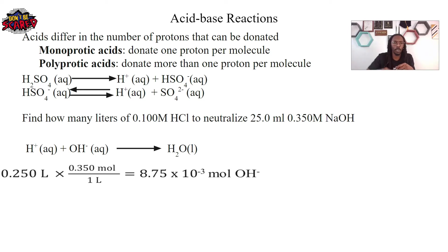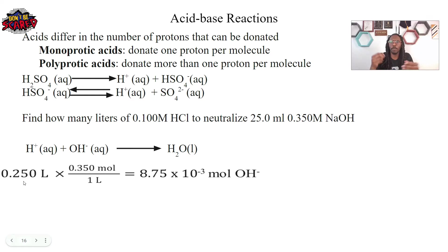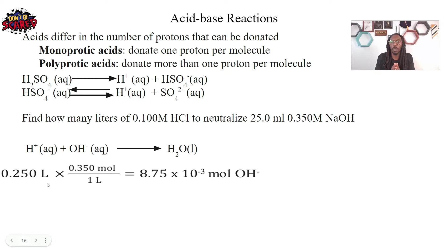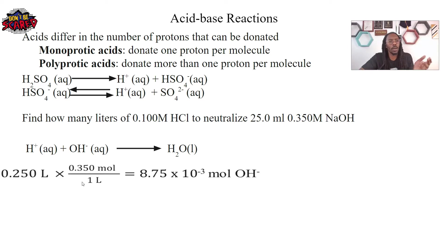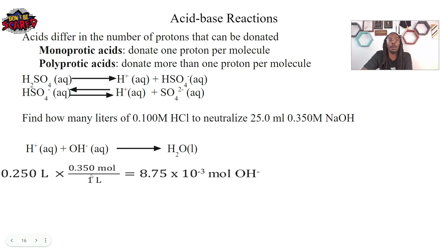Anytime you've got a volume and a molarity, we know that if we multiply those together we're going to get moles, because molarity is moles over liters. This is 25 milliliters — I just converted that to liters, which gives 0.025 liters. It's 1,000 milliliters for every one liter, so you do that conversion and get 0.025 liters. Now we're going to take that liters and multiply by the molarity. The liters cancel out and we're going to have our moles on top, which is what we want. Multiplying together gives 8.75 × 10⁻³ moles of my base.